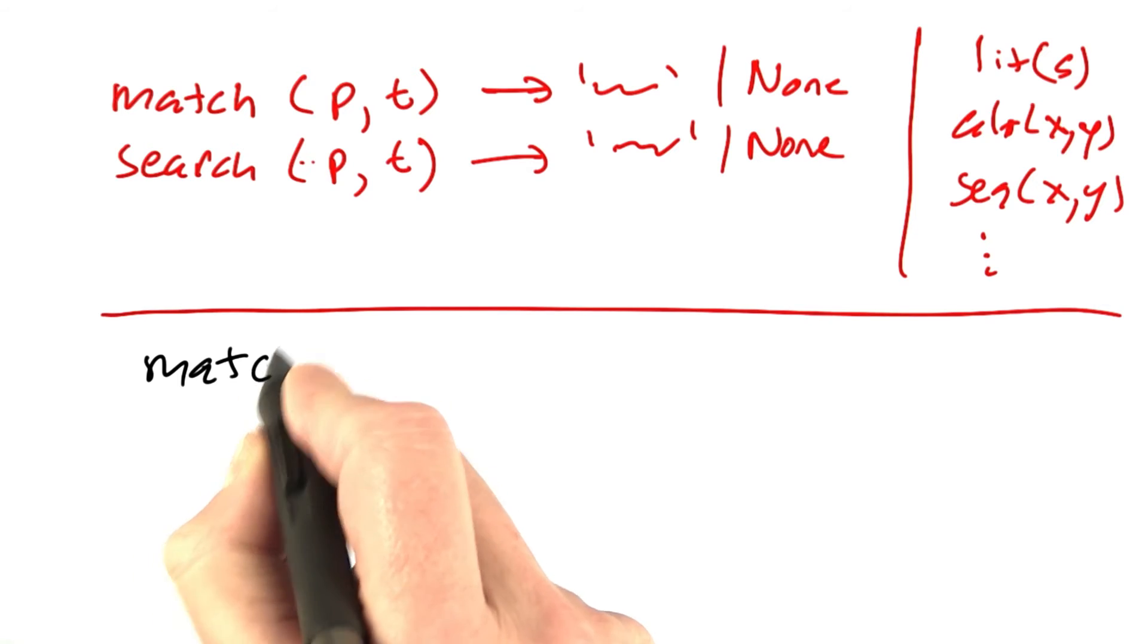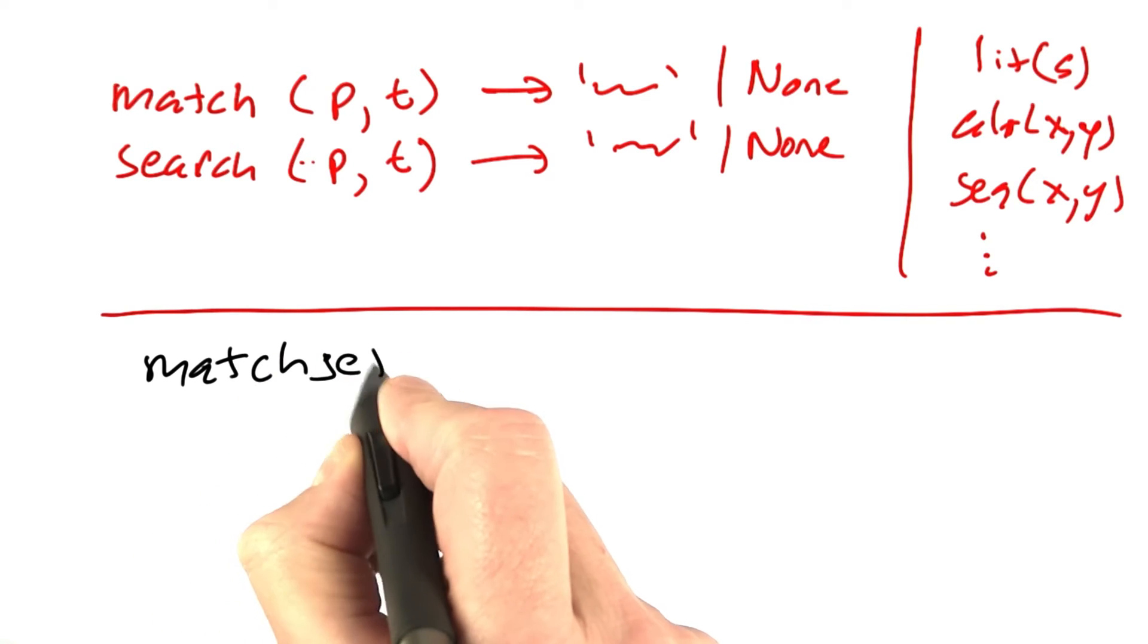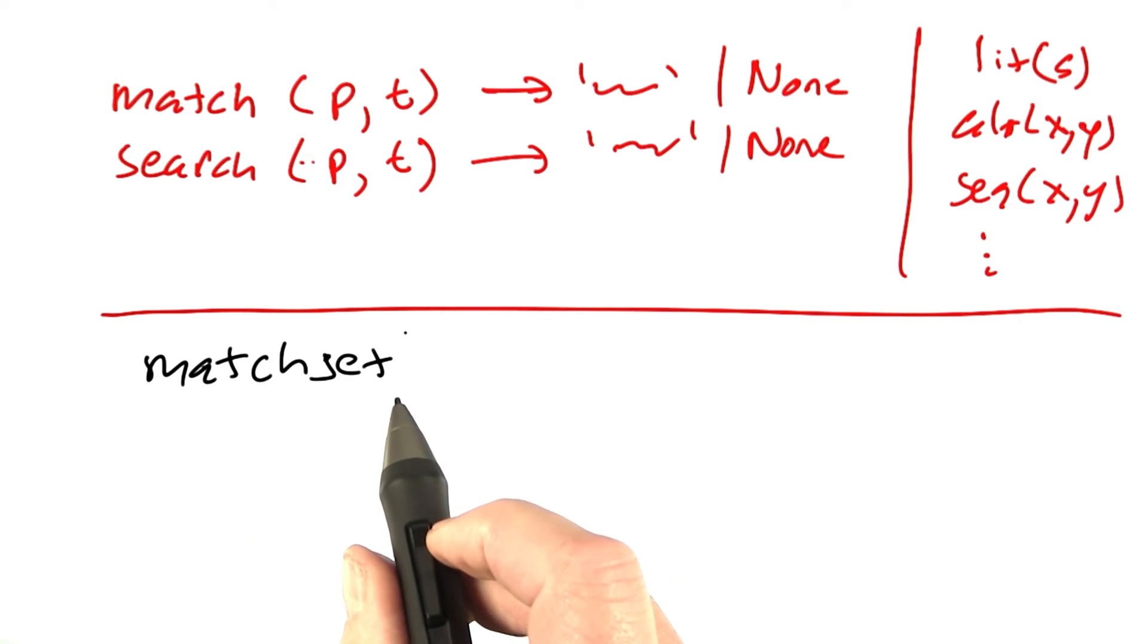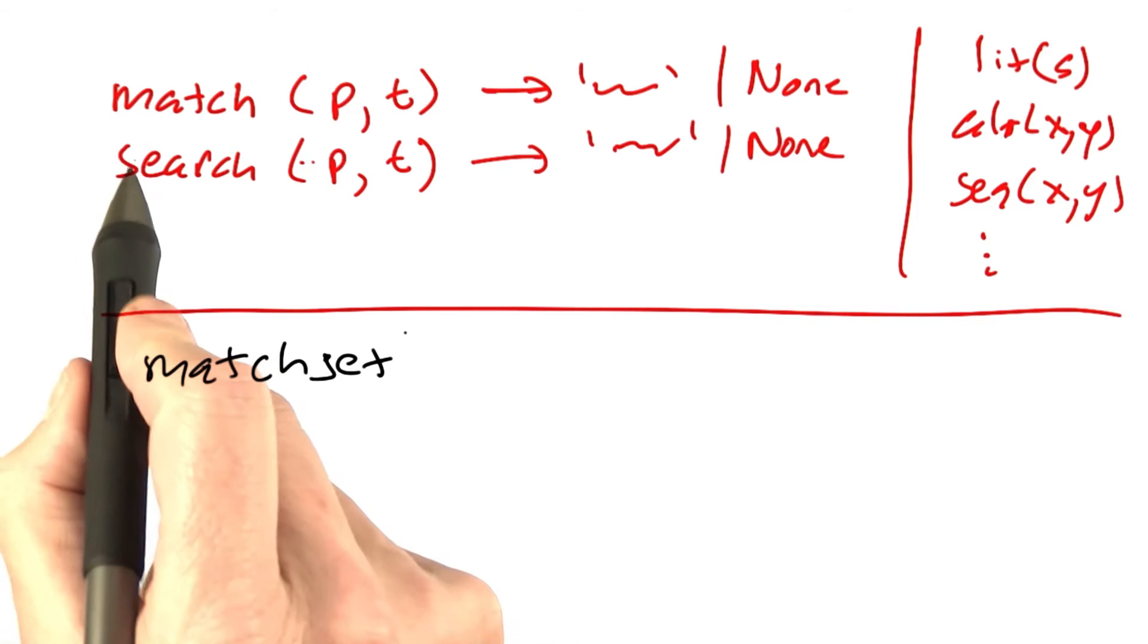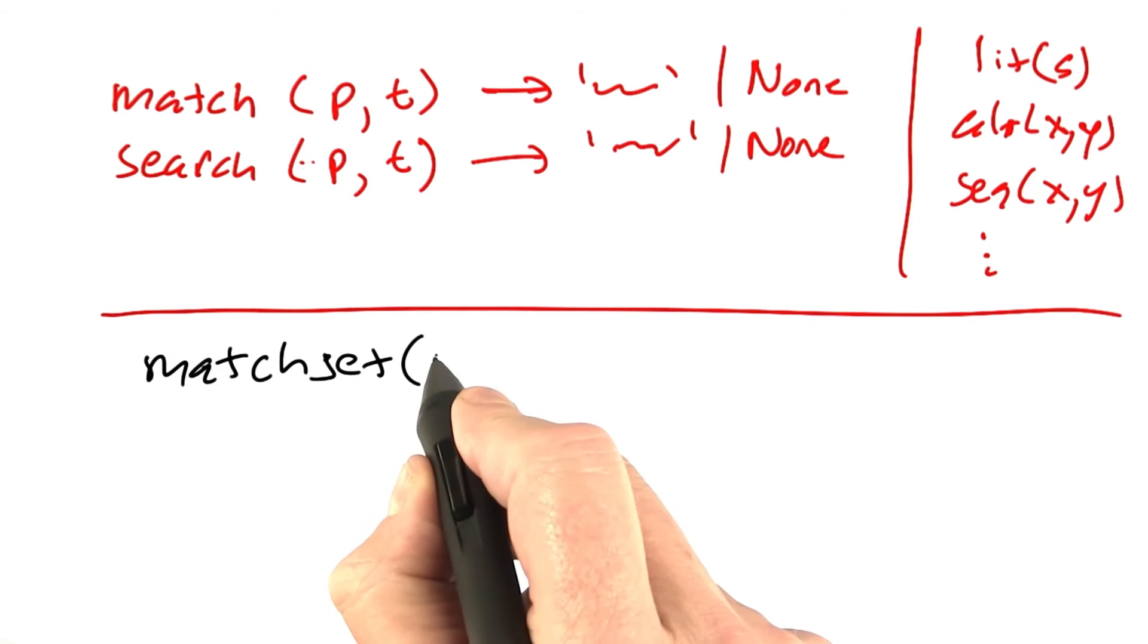And then below the line of the API, sort of an internal function, we've defined matchset, which is not really designed for the programmer to call. It's designed for the programmer to go through this interface, but this function is there.